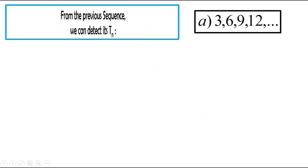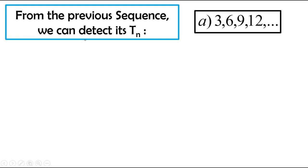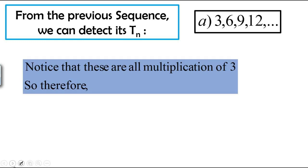Let's look into how to determine the Tn. From here we know that each of the terms are the multiplication of 3, so therefore the triples of n, where n starts with 1, 2, 3, and so on, because we have an infinite sequence here.